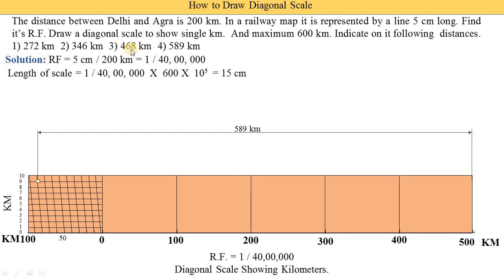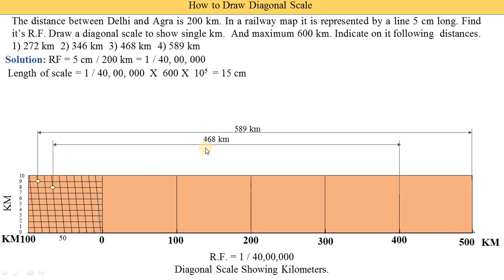Next, we indicate 468 kilometers. We locate 400 on the main scale. To indicate 68, we find the line for 60 on the diagonal scale and move upward 8 divisions on the vertical scale to get the point. From this point we draw a vertical line and mark it as 468 kilometers.